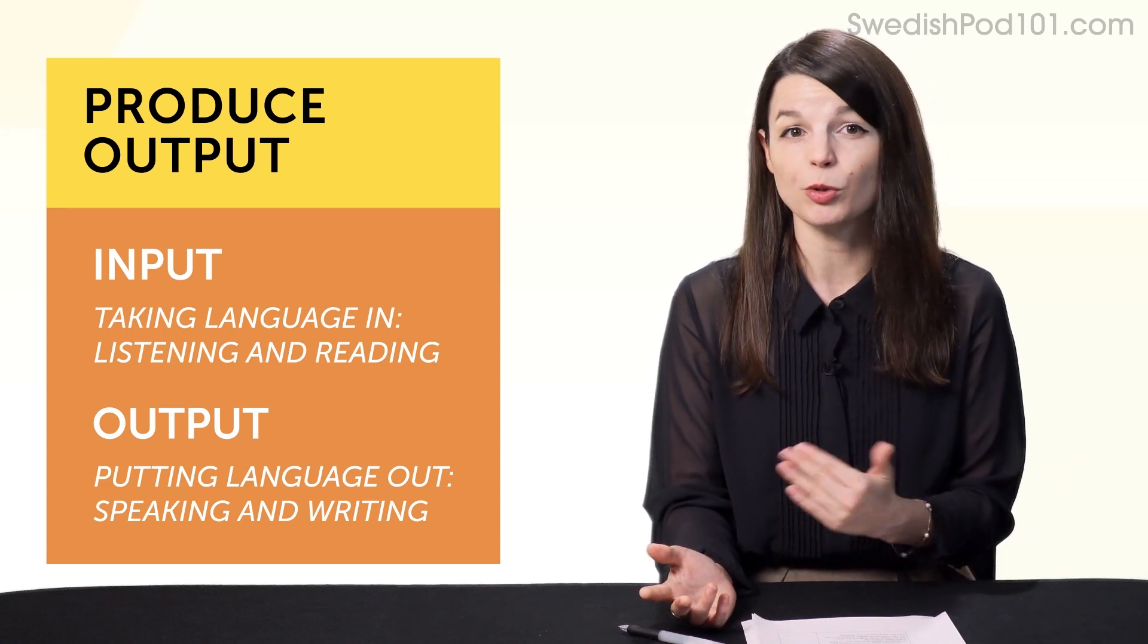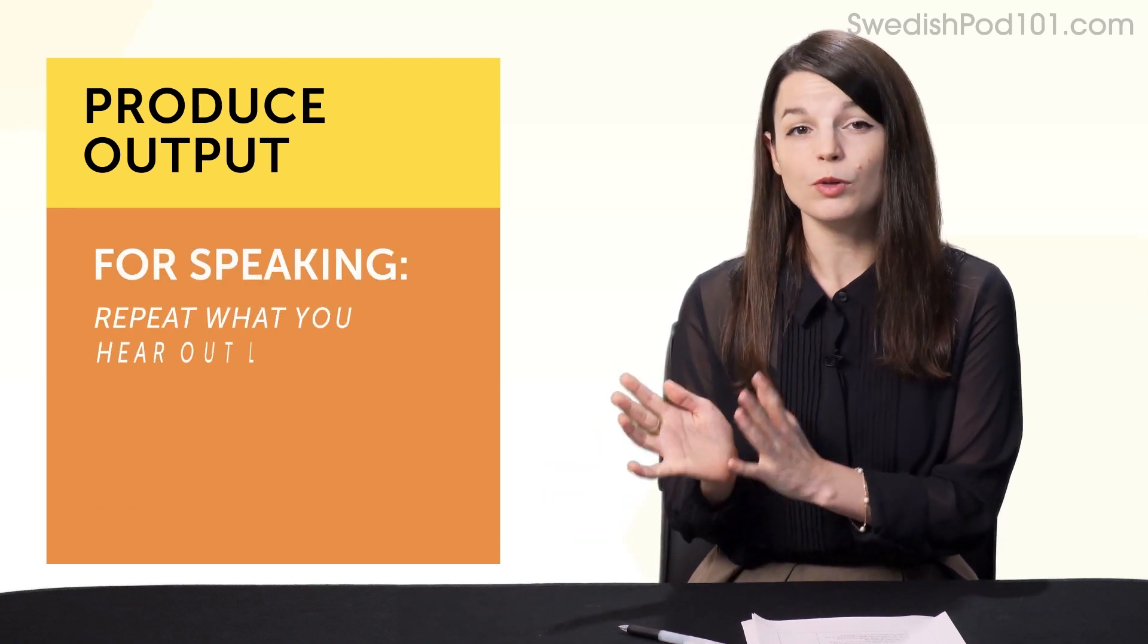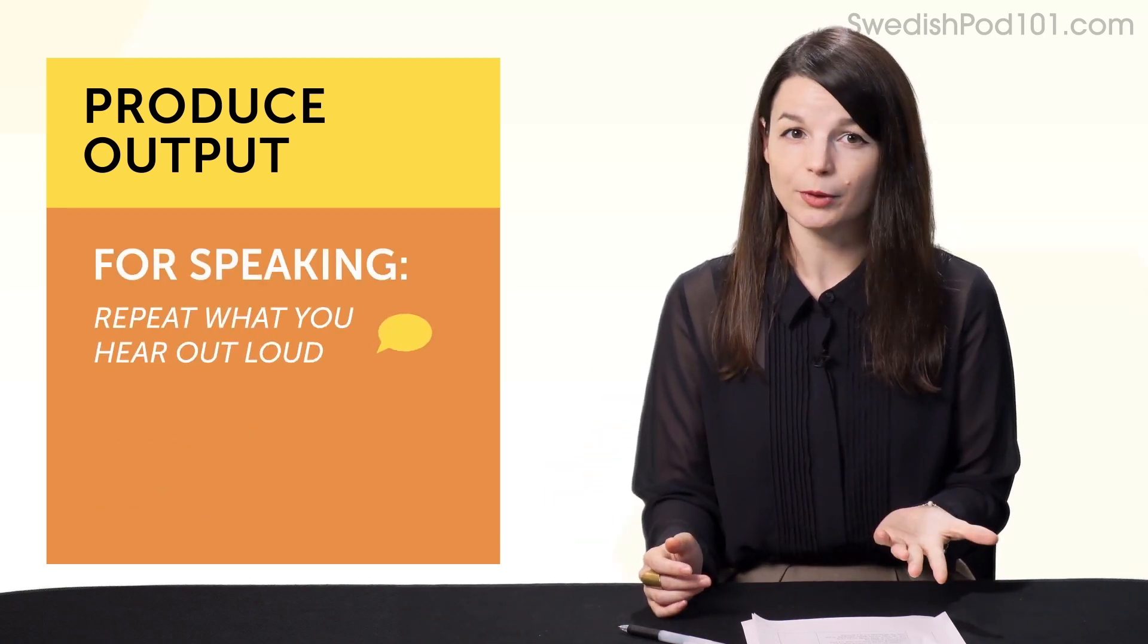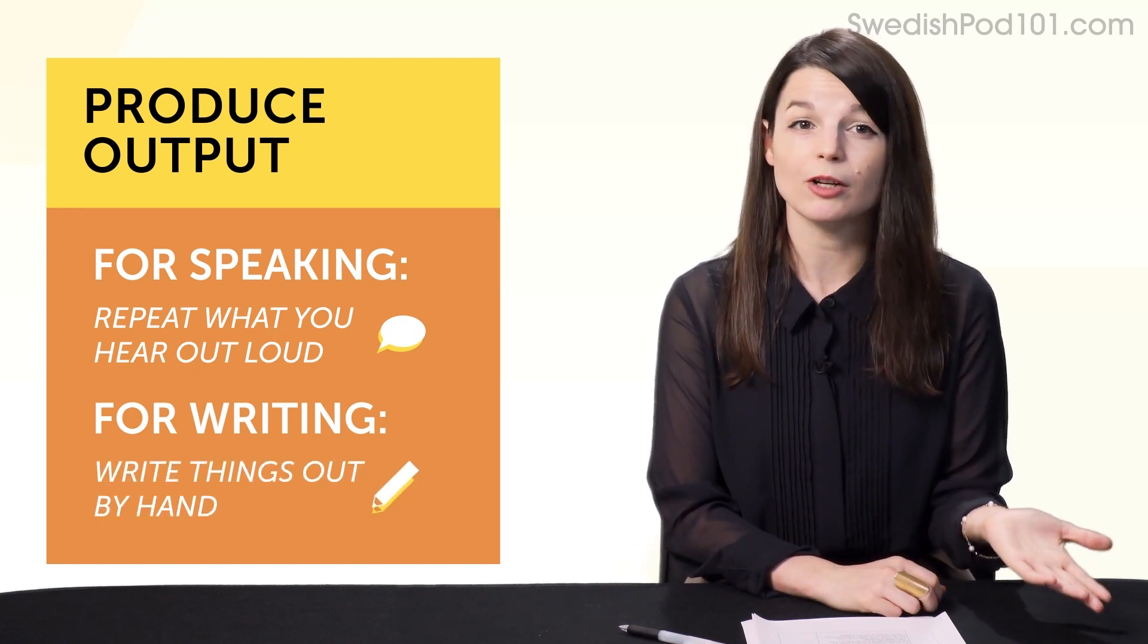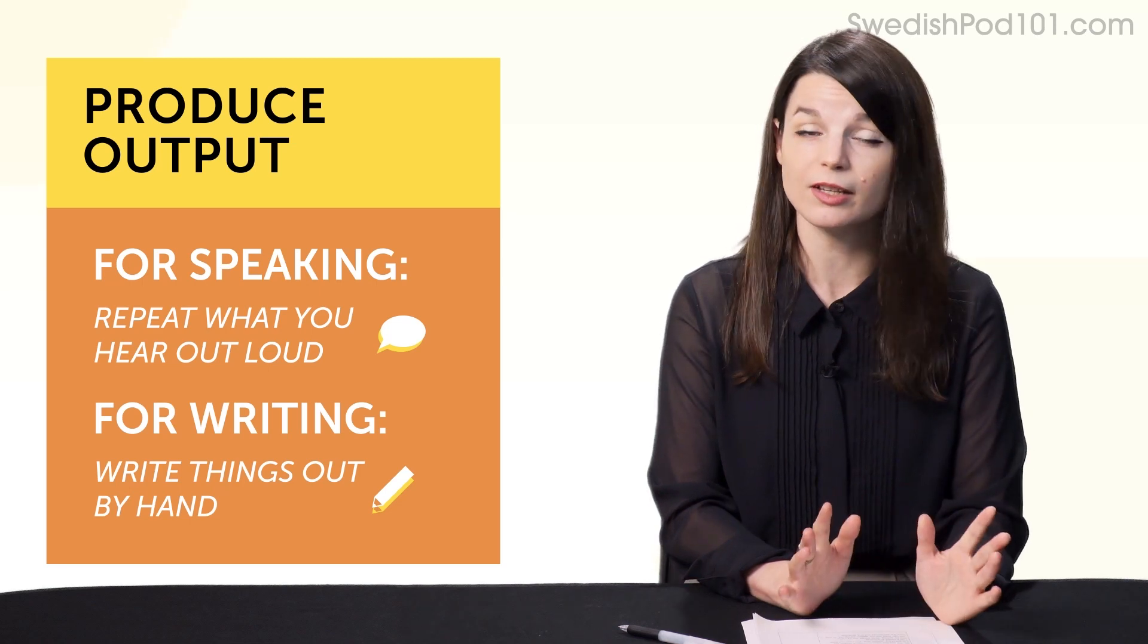So, the easiest ways to produce output are, for speaking, repeat what you hear out loud. That's called shadowing. And for writing, write things out by hand. You can copy out our lesson dialogues or just copy the sentences out of a textbook.